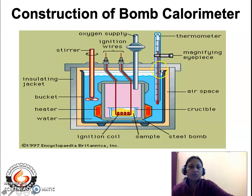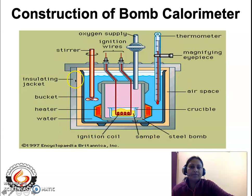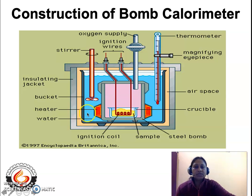The copper calorimeter is enclosed on the outside by an air jacket — labeled as air space in the diagram. The air acts as an insulating layer and helps to prevent loss of heat from the copper calorimeter by radiation. The outer cover of the bomb calorimeter is an insulating jacket, which also helps to prevent any loss of heat from the copper calorimeter. This is all about the construction of a bomb calorimeter.